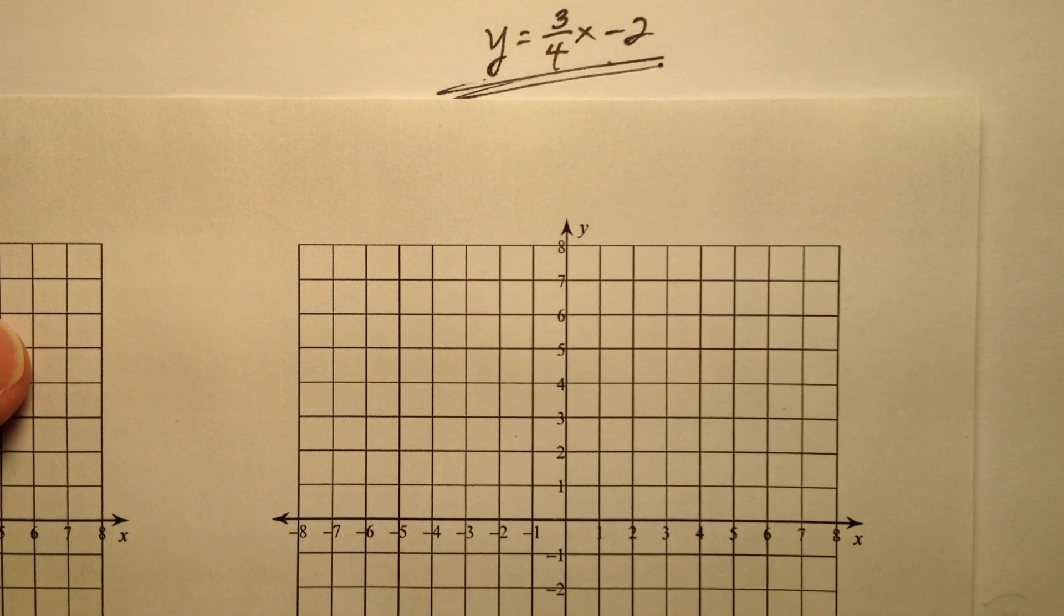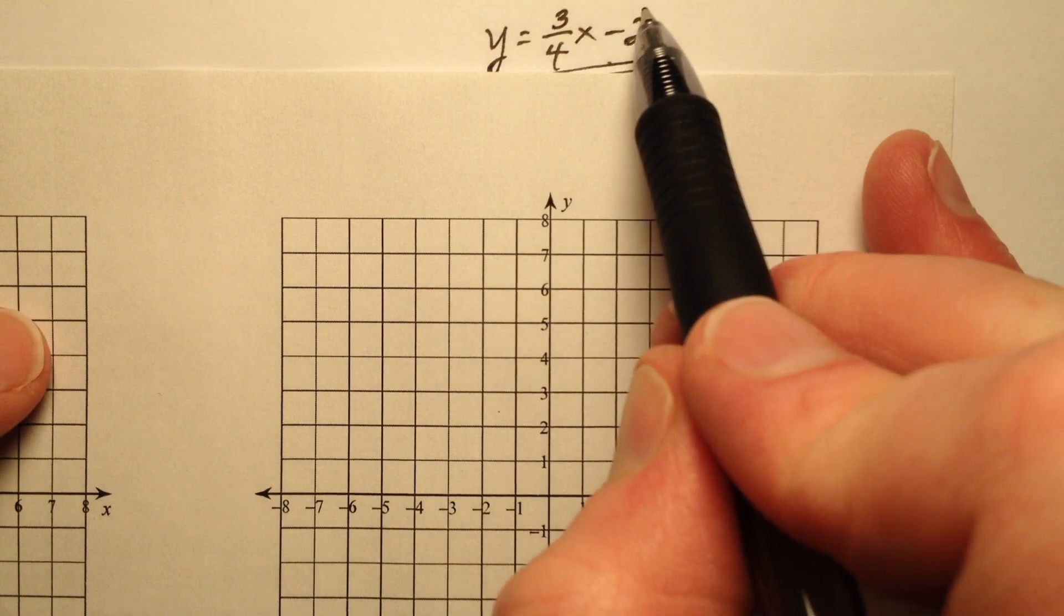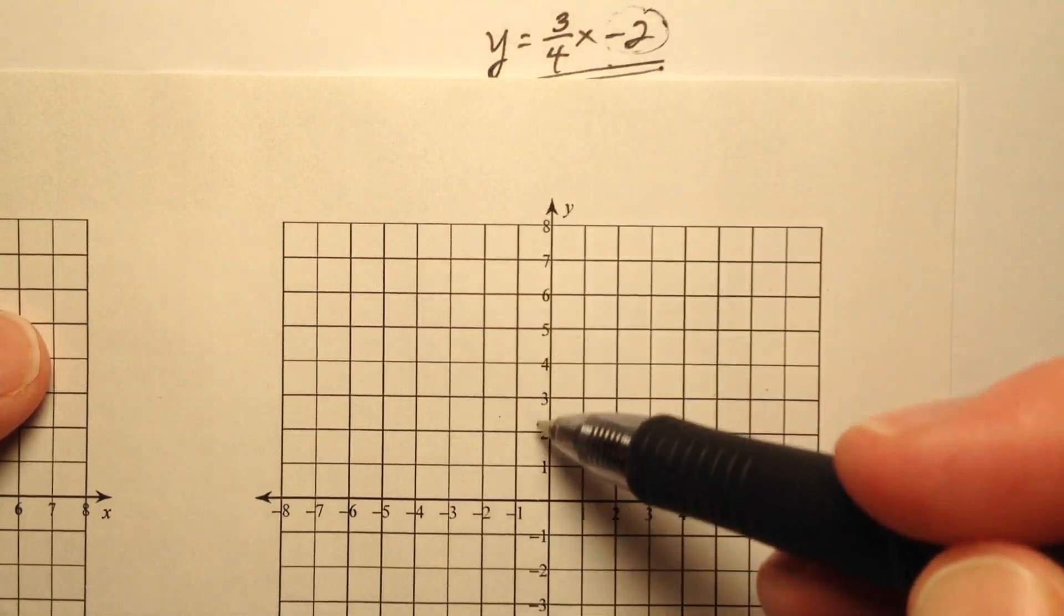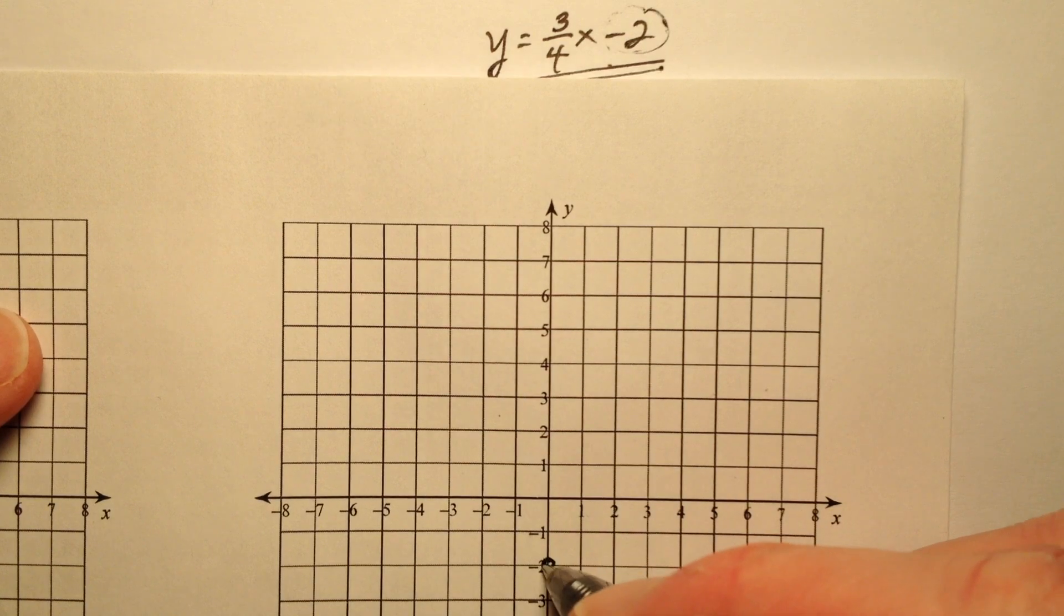So my y-intercept is going to be negative 2, which means I'm going to plot the point along the y-axis, negative 2.